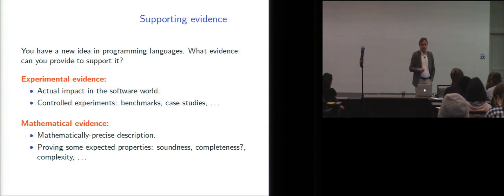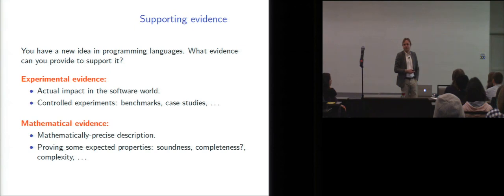So experimental evidence, for instance, if you can demonstrate actual impact of your idea in the software world, but that can take a very long time. Garbage collection and automatic memory management took 30 years to become mainstream, so maybe you want to get your PhD before that. So in general, it's more like controlled experiments, like you have a new optimization phase in the compiler.